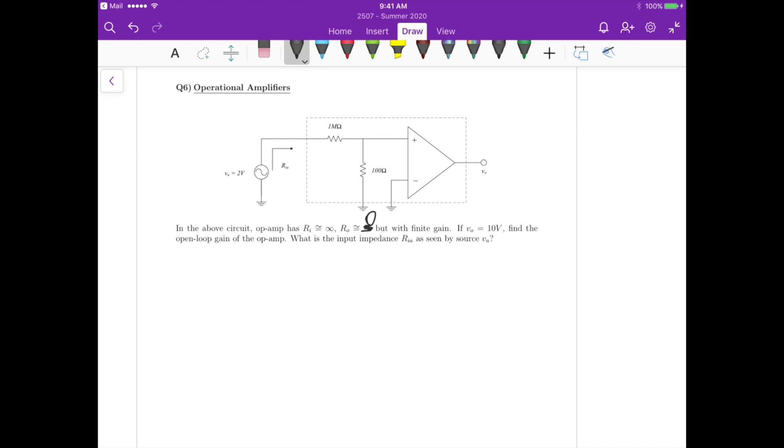So in this case, one of the conditions for the ideal op-amp does not hold for this circuit. A is finite, so it's no longer infinite. Now we know that the voltage at the output is 10 volts. We need to find the open loop gain of the op-amp and also determine the input resistance R_A as seen by the source V_A.